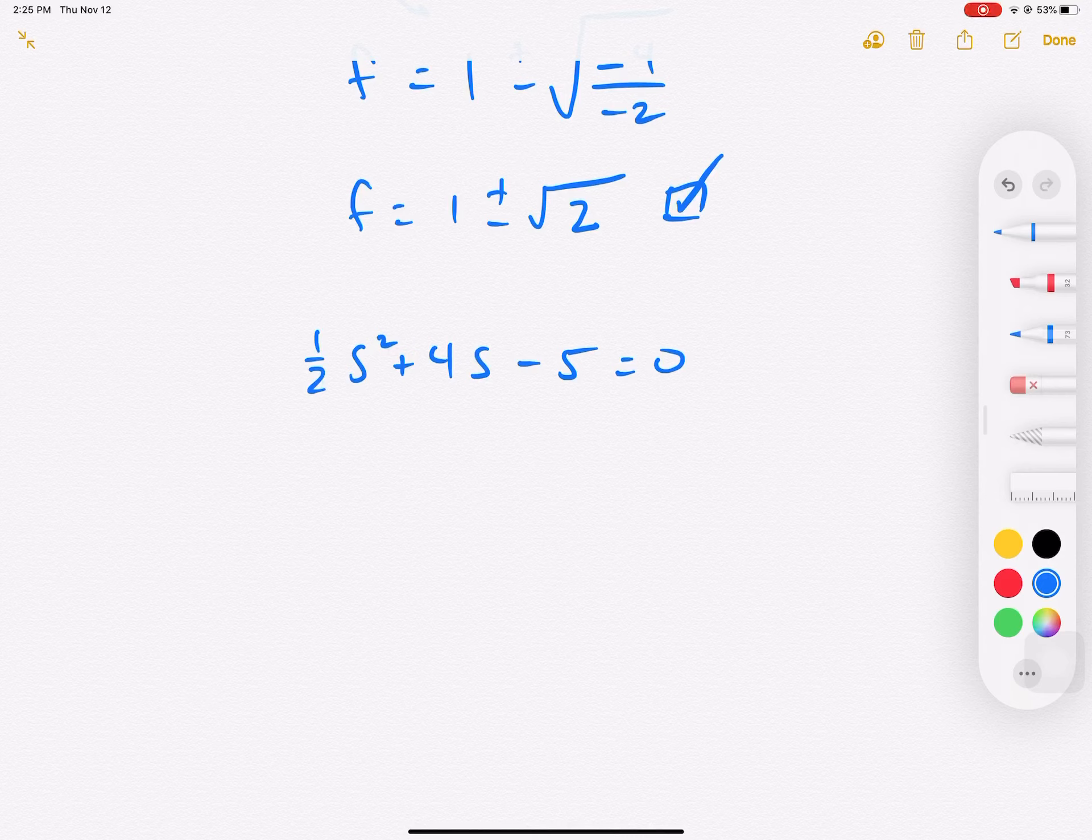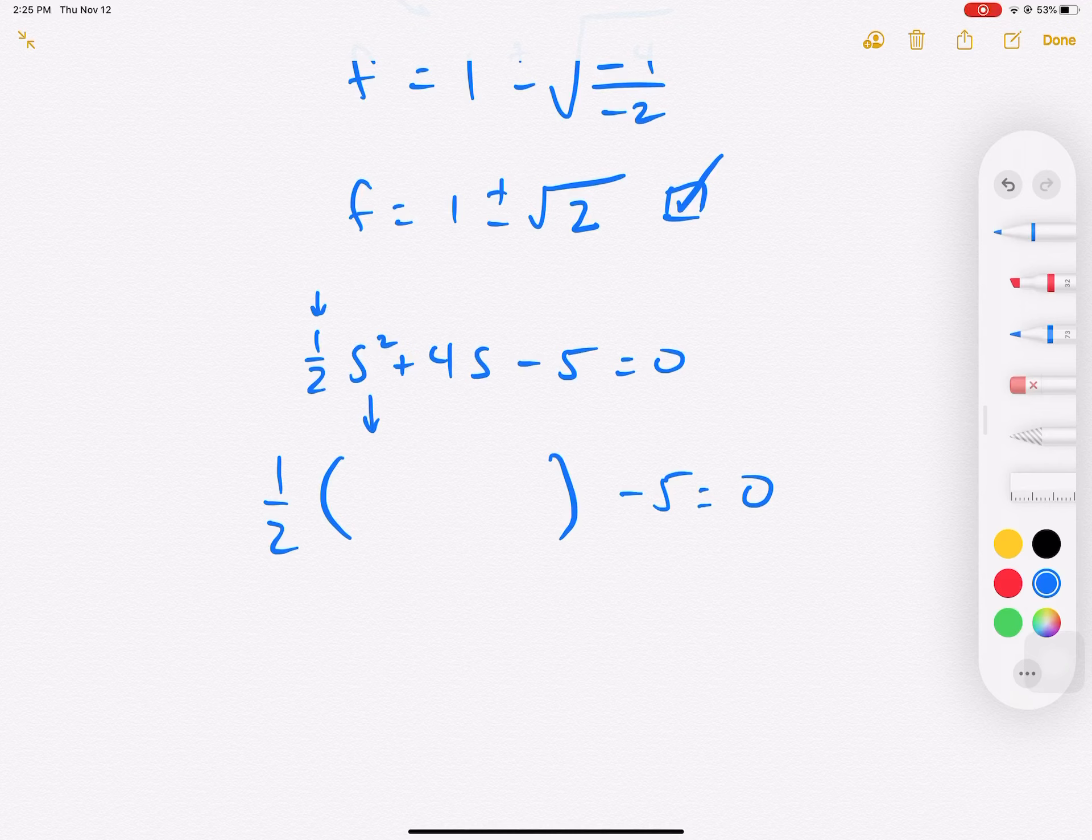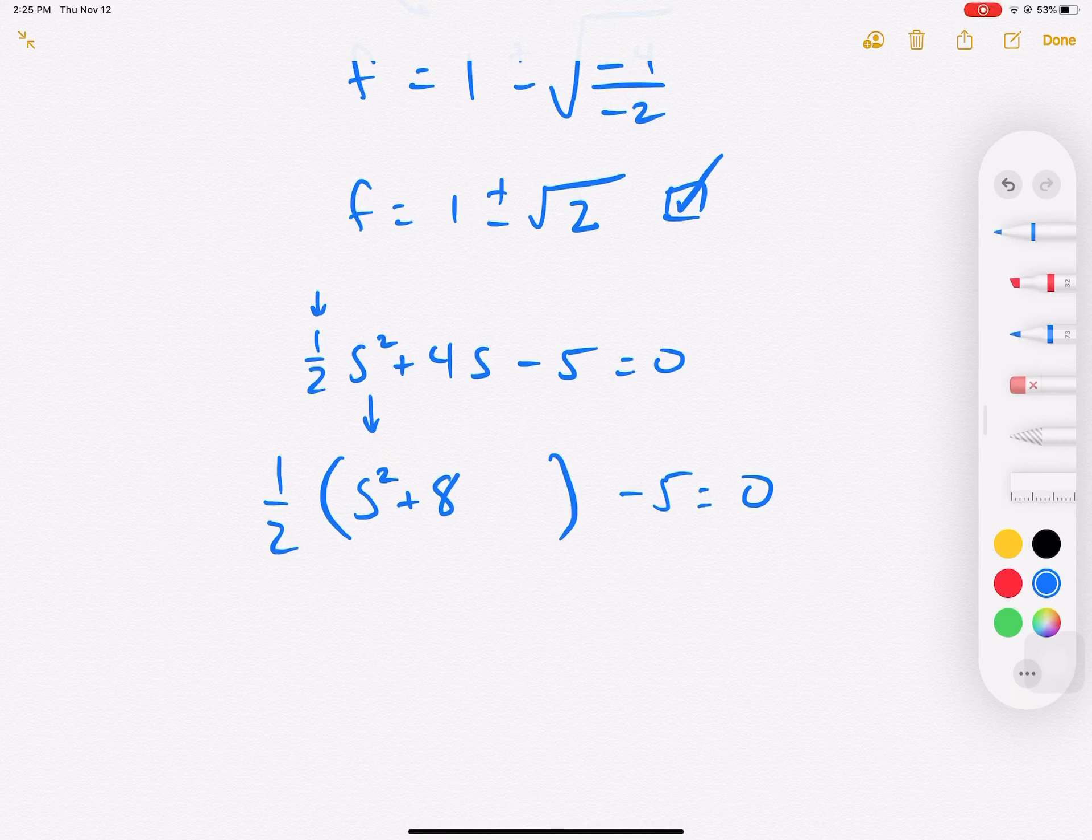All right, so for this problem, same idea. This is level 3, and you get rid of that 1 half, so I'm going to factor out 1 half. It might be kind of lame, but trust me, it's going to be easier. I'm going to leave the negative 5 by itself, and in the parentheses, after I factor out positive 1 half, we are left with s squared plus 8s.